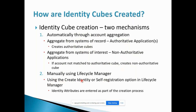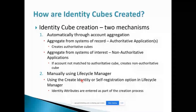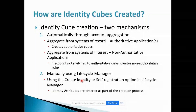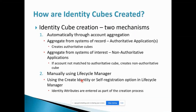For manual identity creation, there is a form within SailPoint where we fill it out and when we hit submit it goes for approval. Once approval is completed, the new identity is created. A self-registration option is also available — when hitting the SailPoint login link, a user can directly self-register to create the identity. The form is populated, and the user is created after approval. However, this is not an ideal process and no organization generally follows it.